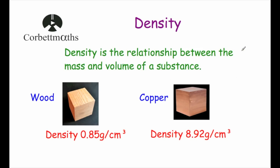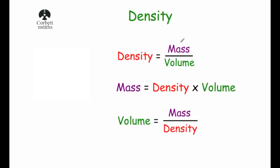Now let's look at the relationship between mass and volume in more detail. Density is calculated by the formula: density = mass divided by volume. Rearranging — if you multiply both sides by volume, you get mass = density × volume. And by dividing both sides by density, you get volume = mass divided by density.